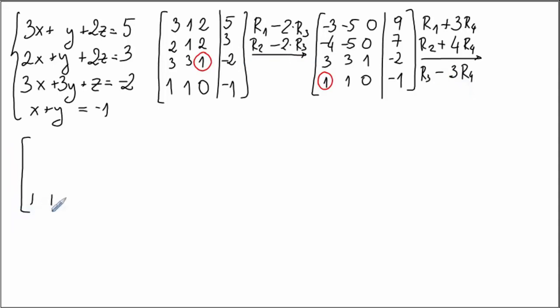The last row doesn't change, and here we have to just do the arithmetic. First row: minus 3 plus 3 is of course 0, minus 5 plus 3, 0 plus 0, negative 9 minus 3 should be 6. Second row: minus 4 plus 4 is of course 0, minus 5 plus 4 is minus 1, 0 plus 0, 7 minus 4, that's 3.